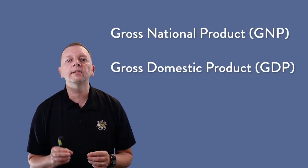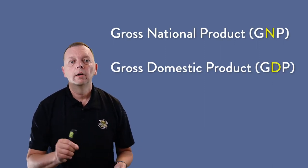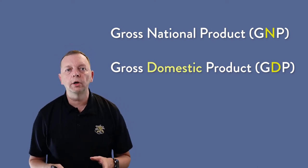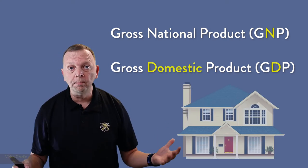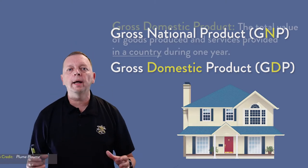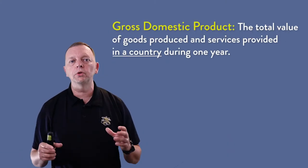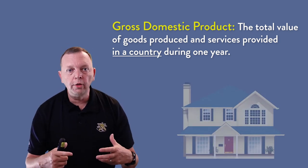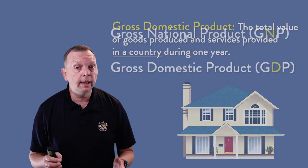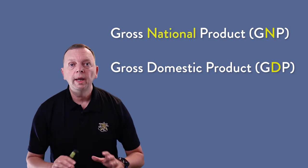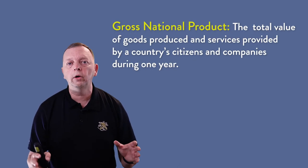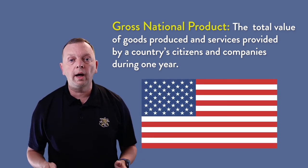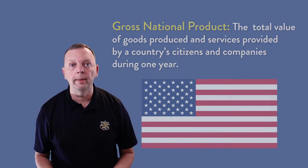The important letter to look at is the middle letter — D for GDP or N for GNP. D is for domestic, which means being at home. So GDP counts all the money made by the sale and purchase of products within the borders of a country — in other words, a country's home. The N in GNP stands for national — the GNP counts all the money earned from the sale and purchase of products by all of its citizens or companies, even if it's outside the borders of the country.